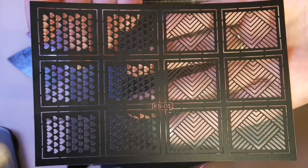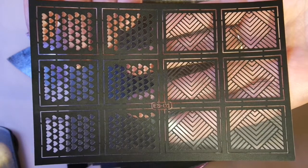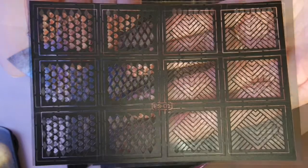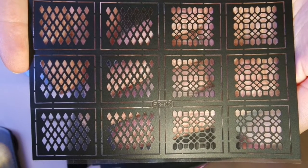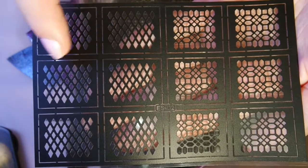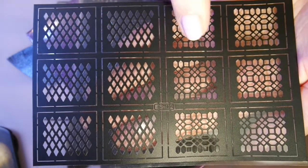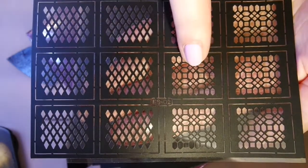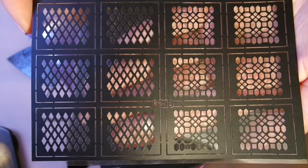So the first design you are getting are these hearts and this abstract design. And this is sheet number ES01. On the second sheet, that's ES02, you are getting this fishnet design. And then you are getting more abstract designs. These are really interesting, I don't think I've seen anything like this.